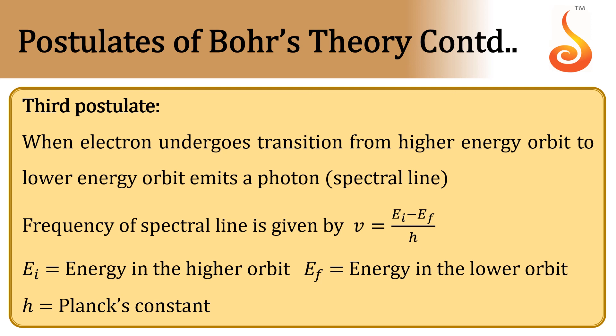Based on that, he gave a formula for the frequency: ν = (Ei - Ef)/h, where Ei is energy in the higher orbit, Ef is energy in the lower orbit, and h is Planck's constant. These are the three postulates of Bohr.